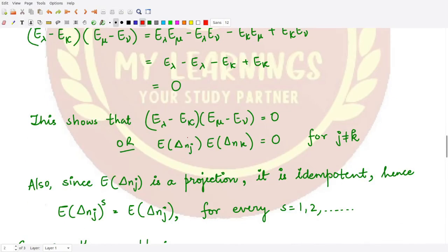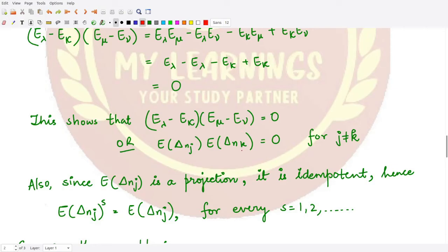This shows that the composition of these two operators gives the zero operator. Each difference of two projection operators can be written in delta notation: E_λ - E_κ as E_Δ(n,j), and E_μ - E_ν as E_Δ(n,k), where j and k are different indices. Their composition equals zero.